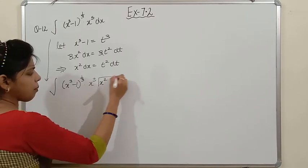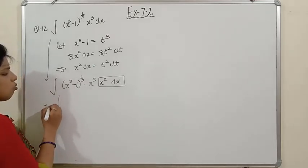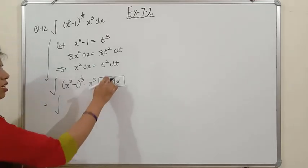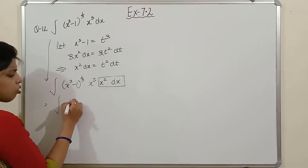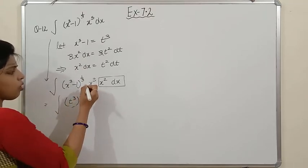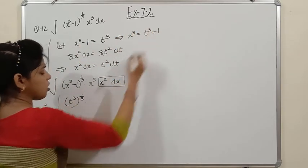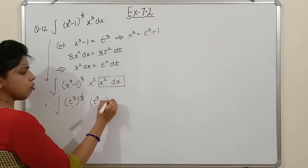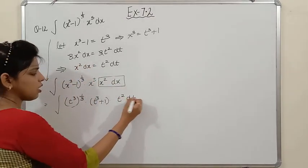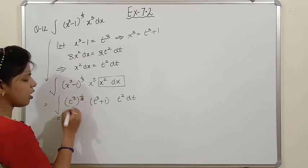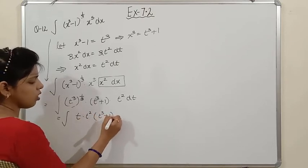We split x^5 as x³ · x² because we directly have the value x² dx = t² dt from our substitution. Now substituting all values: (x³−1)^(1/3) = t, x³ = t³ + 1, and x² dx = t² dt. So the integral becomes ∫t · (t³ + 1) · t² dt.